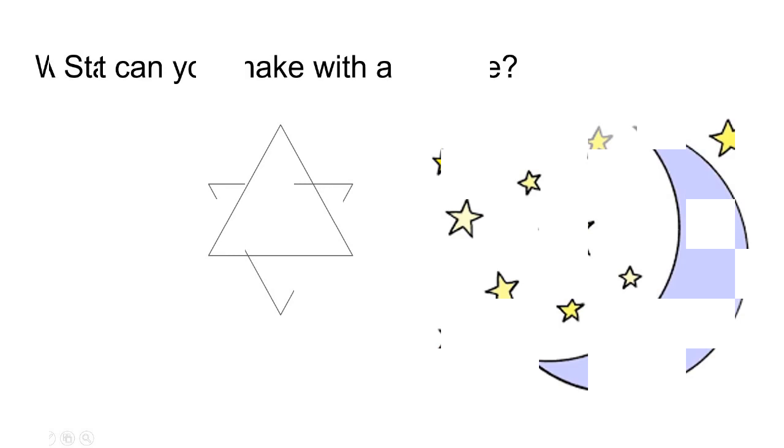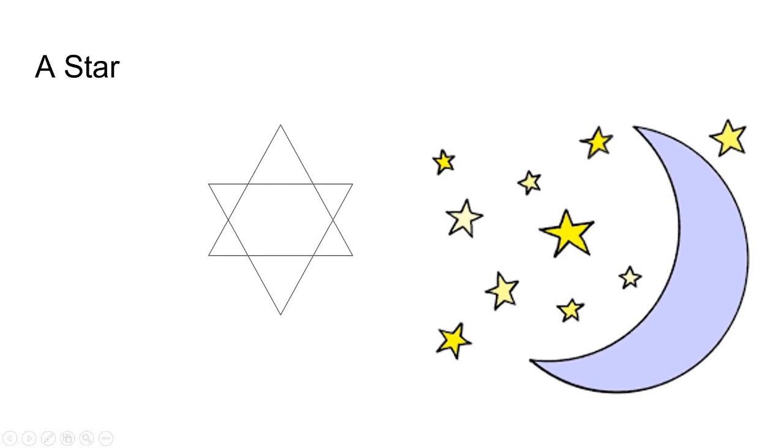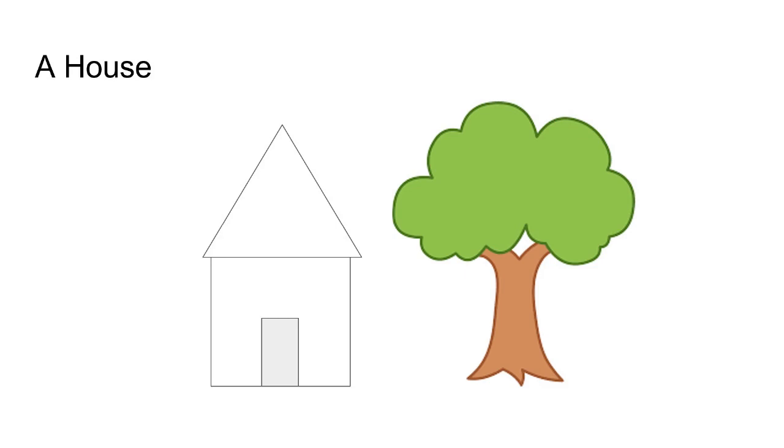For example, I might make a star. I could start with a triangle, and then I could make a house.